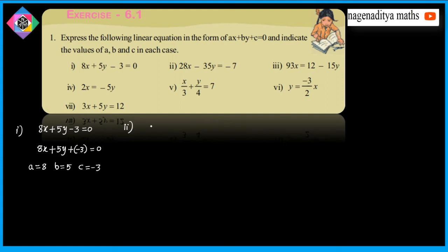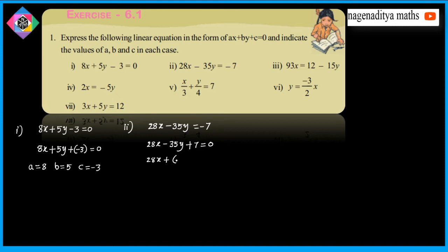Second problem: 28x minus 35y is equal to minus 7. Moving minus 7 to the left hand side, this becomes 28x plus (minus 35y) plus 7 is equal to 0. Comparing with Ax plus By plus C equals 0, A is equal to 28, B is equal to minus 35, and C is equal to 7.